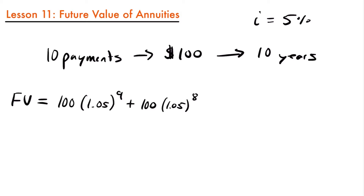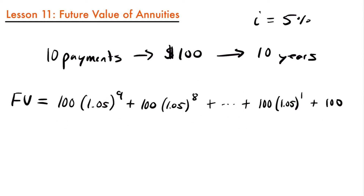I'm going to skip a few of these calculations, but if we continue on, we get to our last two payments. Our payment at year nine gives us $100 multiplied by 1.05 to the first power, because there's only one more year left for compounding. Then at the end of the tenth year, we have our last $100 that isn't going to be compounded at all — it's just put into the account. We could certainly calculate the future value this way, but admittedly that's a lot of work. It's not exactly the quickest calculation, so we would rather have an easier way to do this.